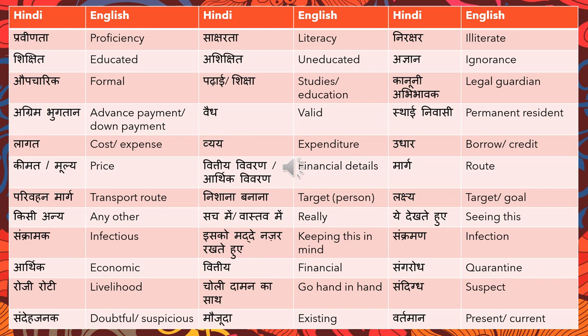'Praveeanta' means proficiency. 'Saksharta' means literacy. 'Nirakshar' means illiterate. 'Shikshit' means educated; 'Ashikshit' means uneducated. 'Agyan' means ignorance. 'Aupcharik' means formal — for example, 'Have you received formal education?' is 'Kya aapko aupcharik shiksha mili hai?' 'Padhai' or 'Shikshan' means studies or education. 'Kanuni abhibhavak' means legal guardian — 'kanuni' means legal and 'abhibhavak' means guardian.